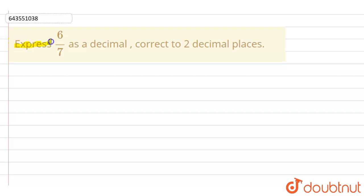Hello everyone, the question is express 6 upon 7 as a decimal correct to two decimal places.